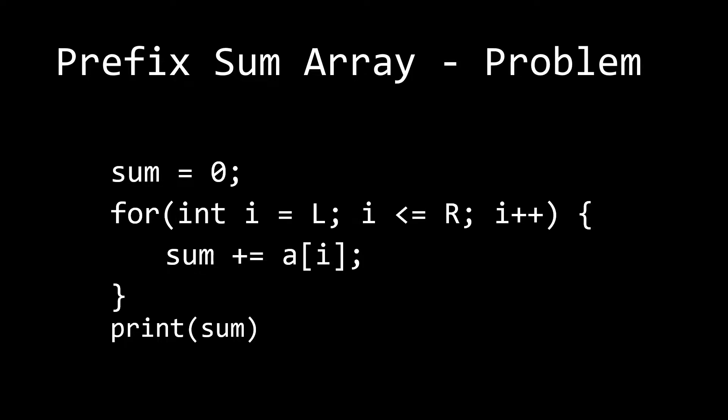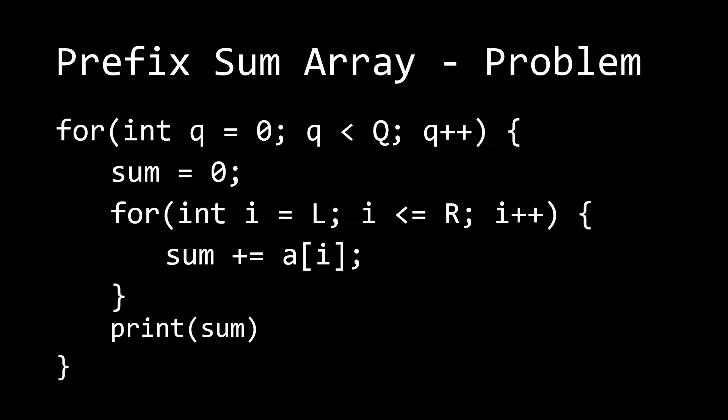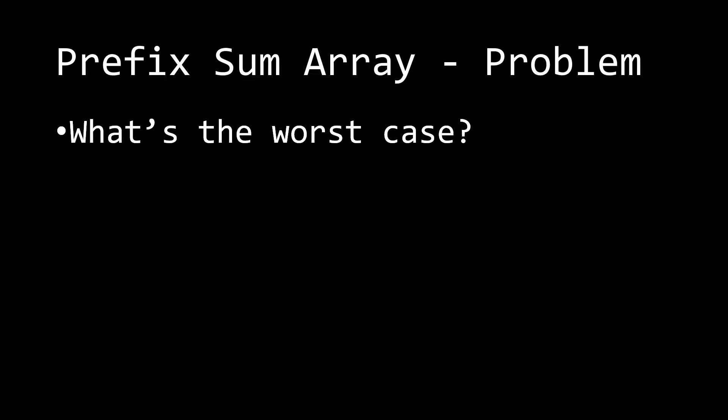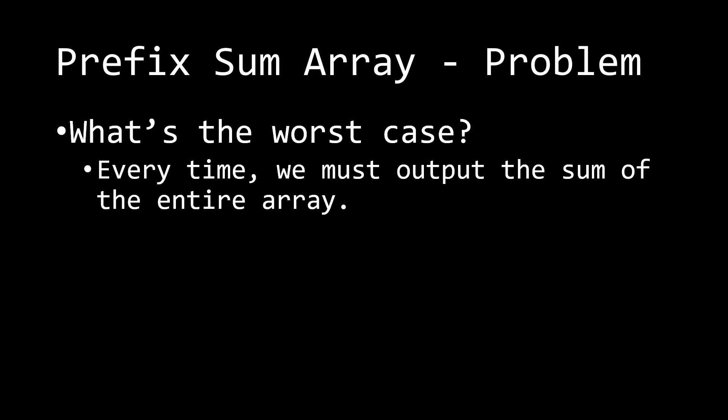Since our problem says we're going to do the operation Q times, we have to wrap this in another for loop that runs Q times. For every iteration we might take a different L and R value, but we're still iterating through that range. This is the standard approach. The worst case is that every time we must output the sum of the entire array, giving us a time complexity of O(N × Q).